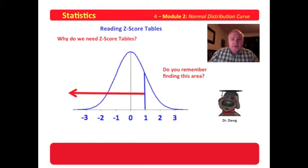Reading z-score tables is pretty interesting. Do you remember this particular diagram from a previous lecture? In it, we have the bell curve. This is obviously the standard normal distribution. We know that because it is centered on 0, and the standard deviation is equal to 1.